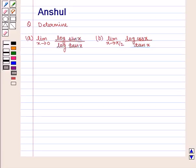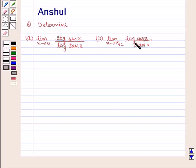Hello and welcome to the session. In this session, we are going to discuss the following question: Determine (a) the limit of log(sin x) upon log(tan x) as x tends to 0, and (b) the limit of log(cos x) upon tan x as x tends to pi by 2.